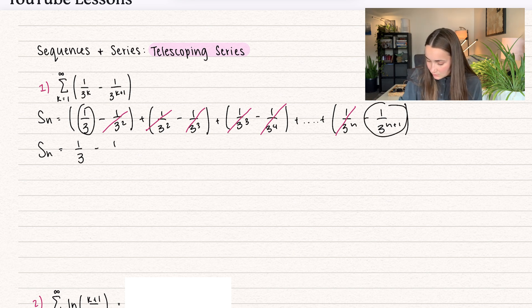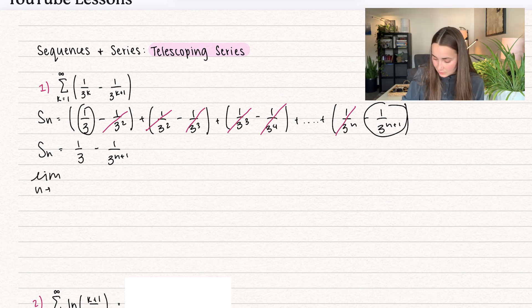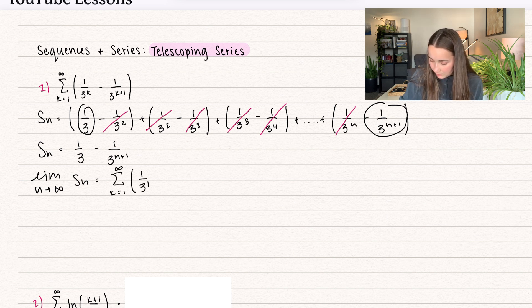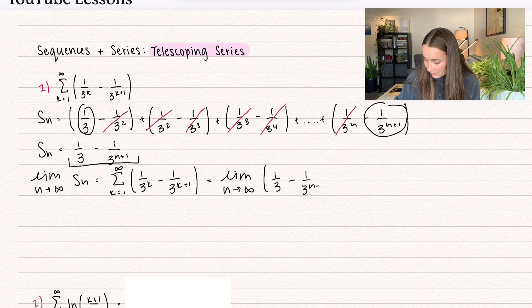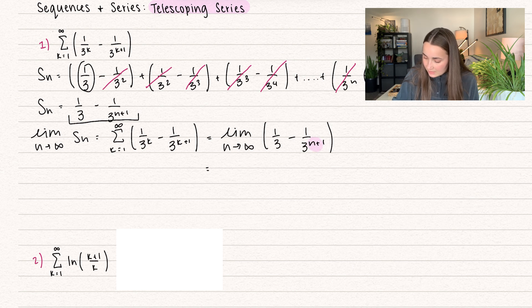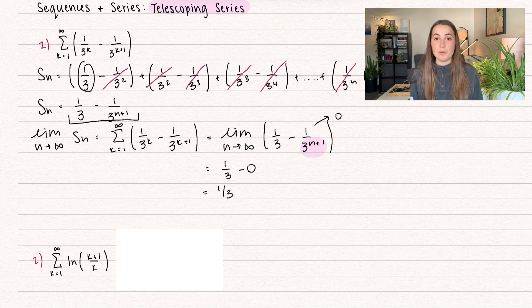Our partial sum is actually just equal to 1/3 — that's one of our leftovers — minus 1 over 3 to the n plus 1. Now we can look at the infinite series, because the limit as n goes to infinity of our partial sum equals the actual infinite series: the summation from k equals 1 to infinity of 1 over 3^k minus 1 over 3^(k+1). Taking the limit as n goes to infinity of 1/3 minus 1 over 3^(n+1): as n goes to infinity, that term gets really big in the denominator, so it goes to 0. We get 1/3 minus 0, which equals 1/3. Since this is an actual value, our infinite series converges to 1/3.